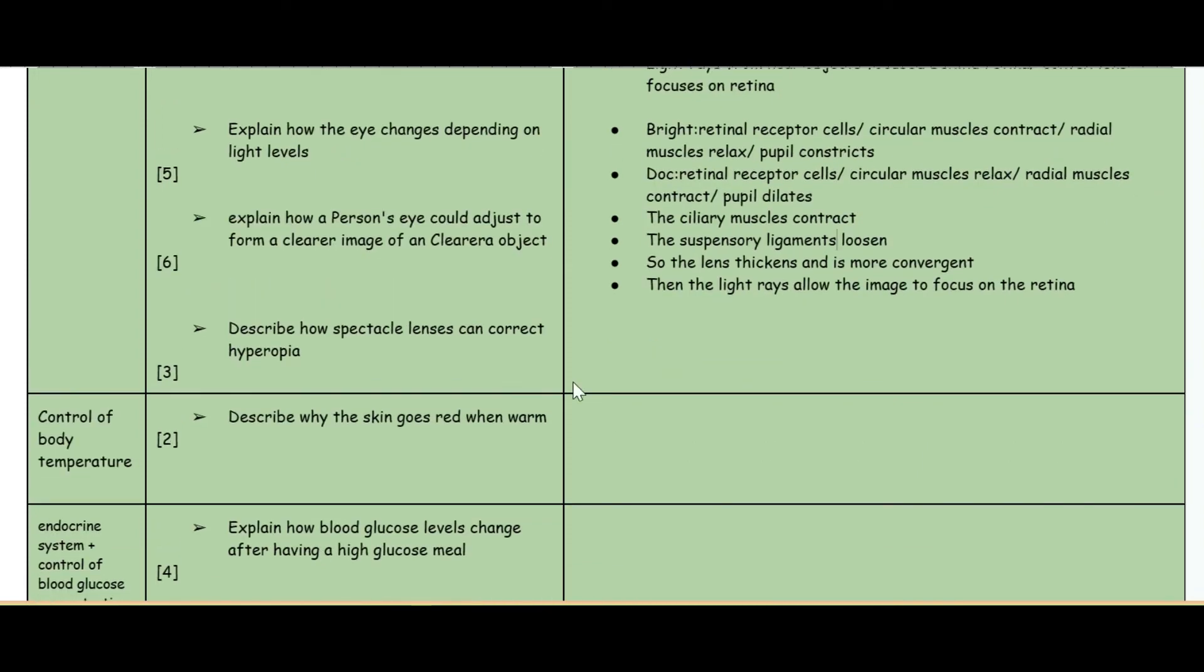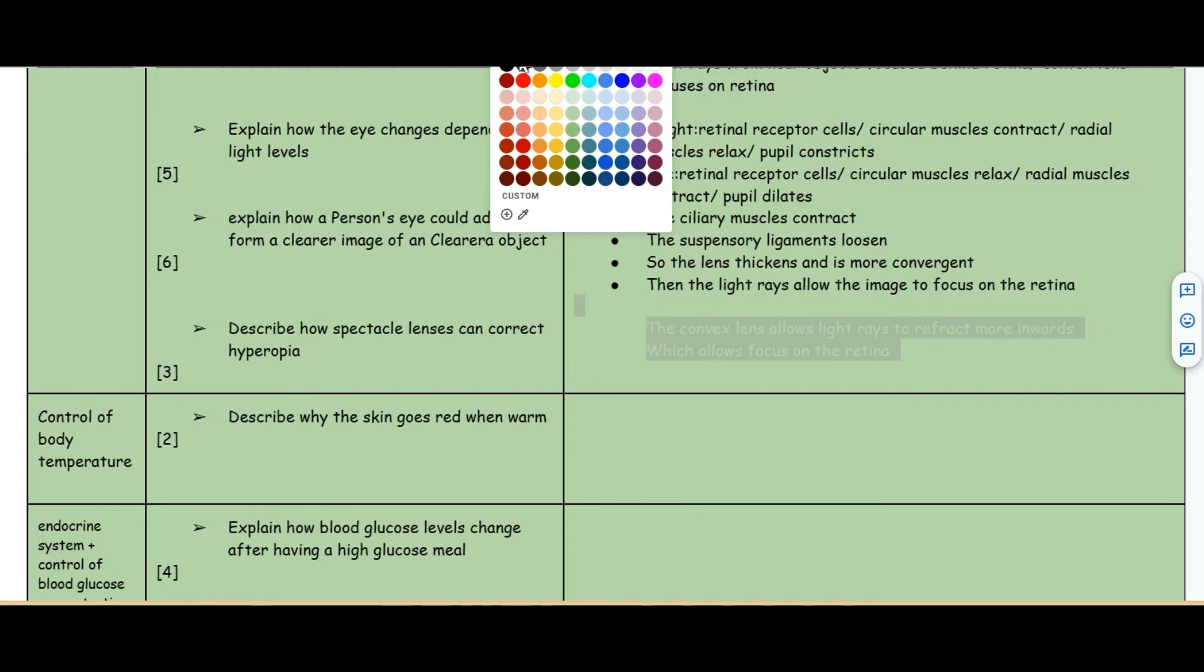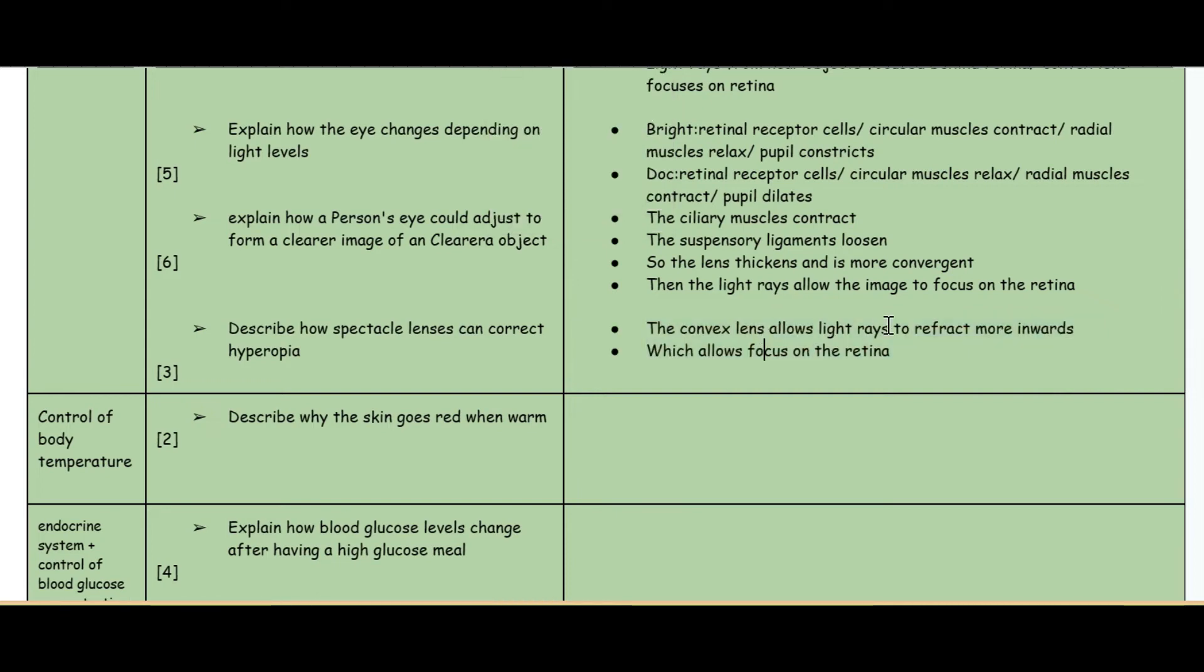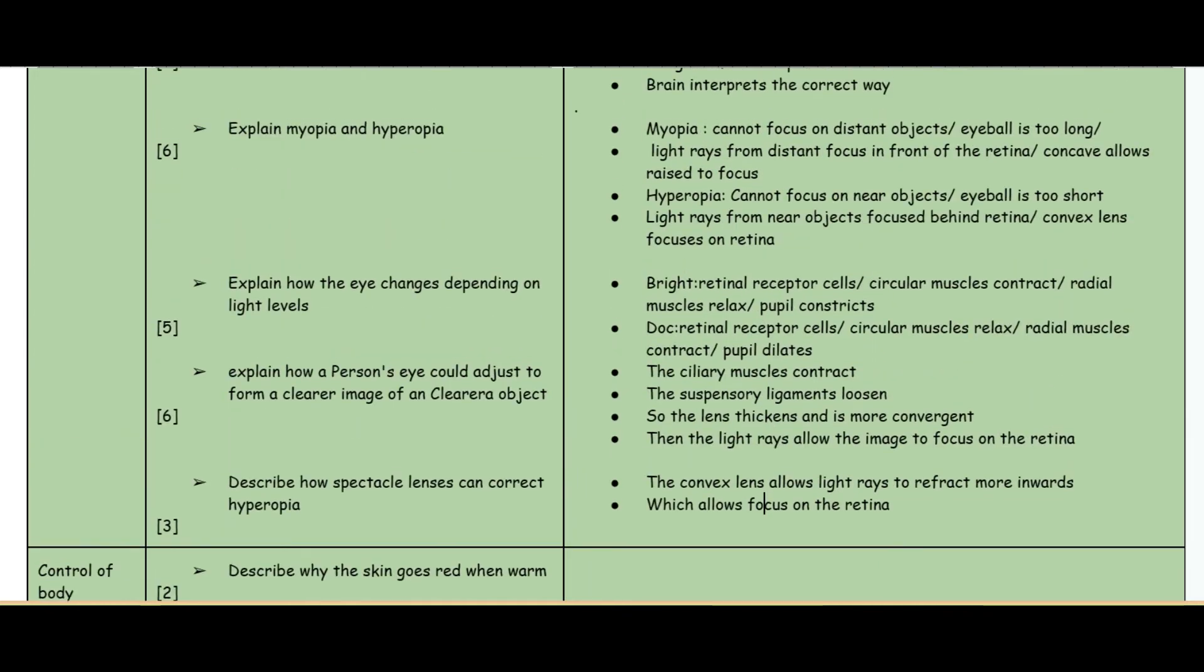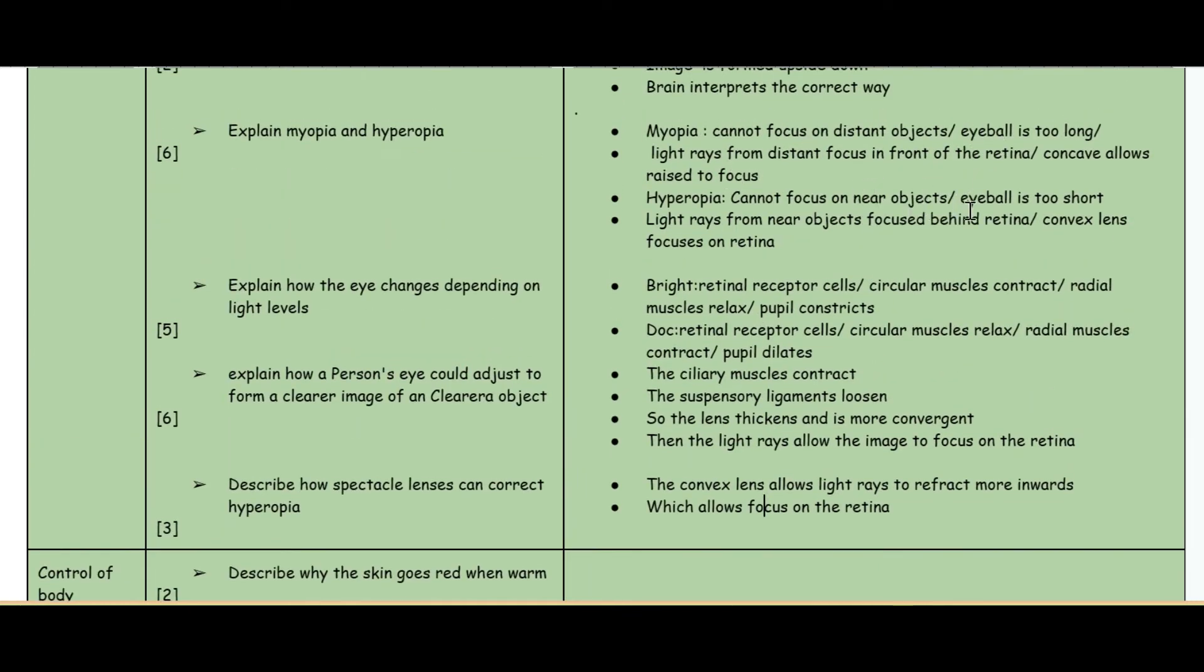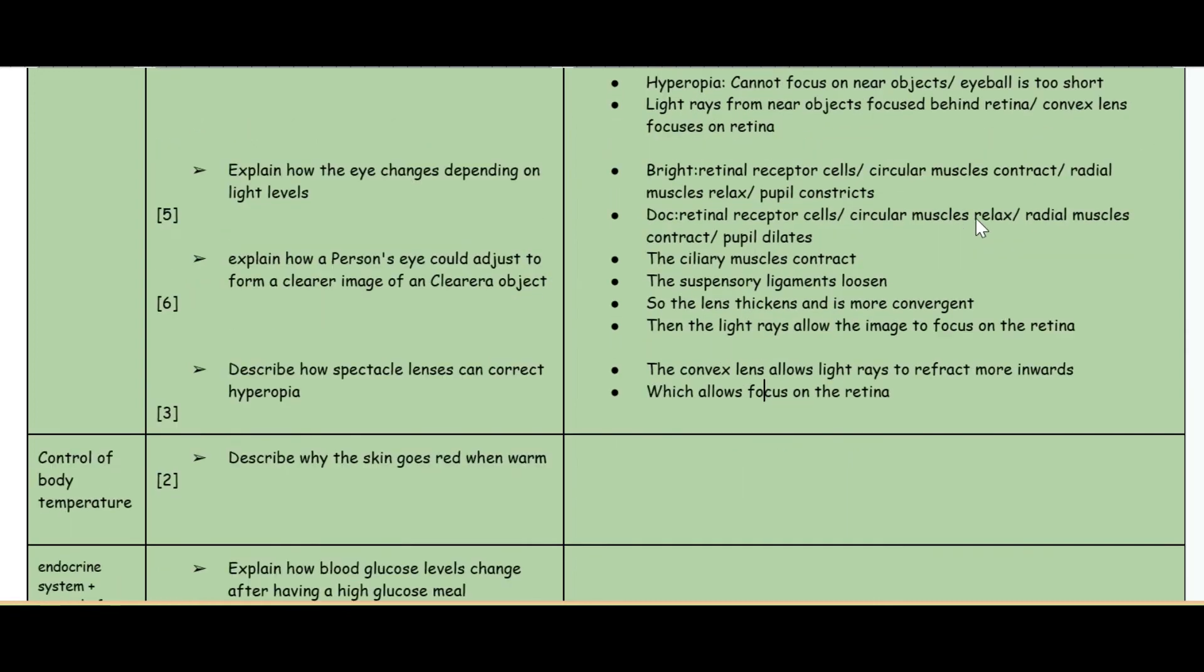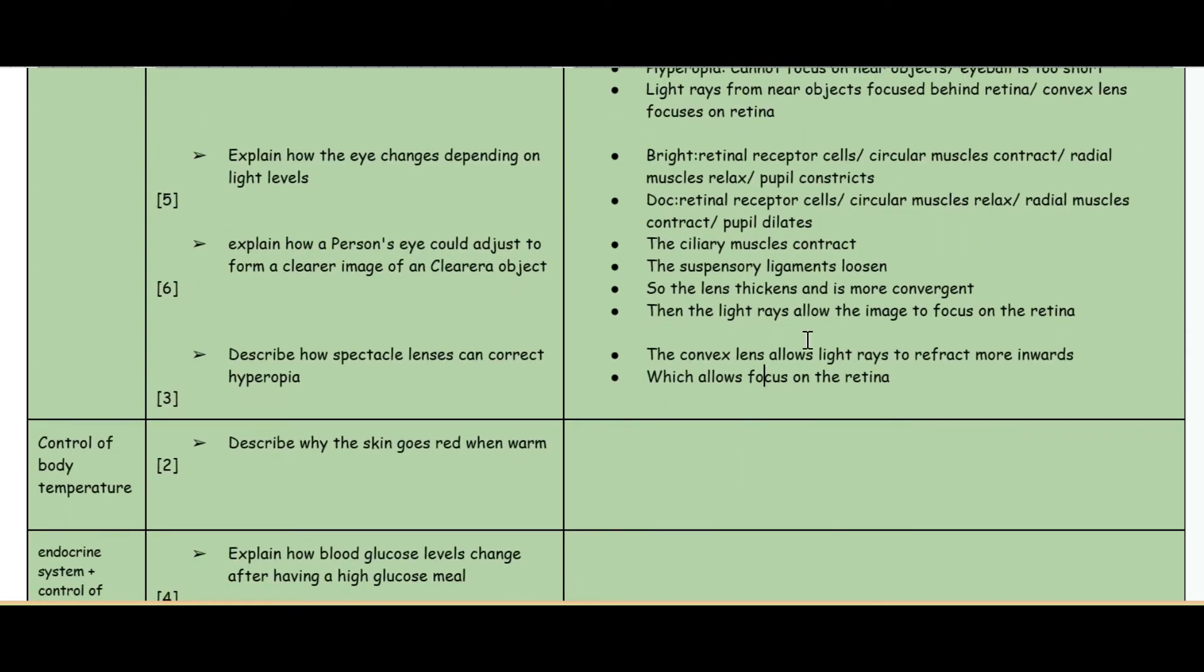The final question about the eye: describe how spectacle lenses can correct hyperopia. Talking about those convex lenses - it allows light rays to refract more inwards. Remember, hyperopia is when you cannot focus on near objects because the image is forming behind the retina, so it allows you to move the image more inwards which allows the focus to be on the retina.